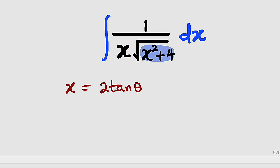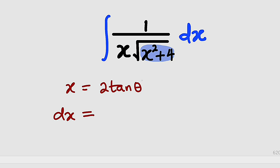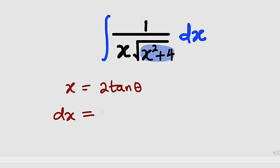Let us differentiate both sides. If you differentiate this, you have dx. 2 is constant, but the derivative of tan(theta) is secant squared theta. So dx equals 2 secant squared theta d theta.